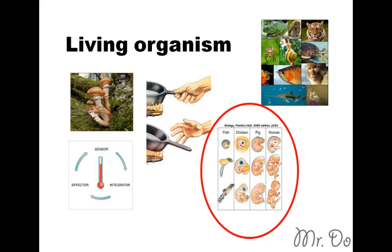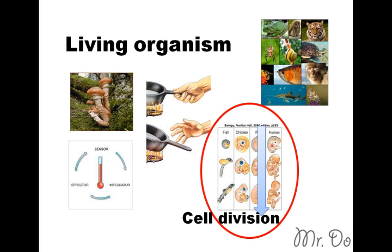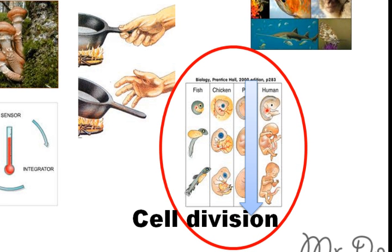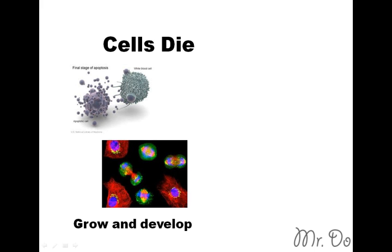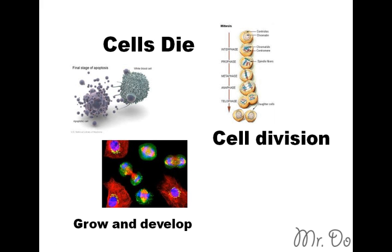Reproduction and growth and development require that cells divide. As you grow from a baby into an adult, your body cells start to divide and multiply, and as the number increases, that's how you grow and develop. Cell division is very important for a living organism — it's responsible for reproduction, growth and development, and also tissue renewal. Every day the cells in our body die, so it's very important that we're able to renew the dead cells with new cells. That's when cell division comes in.